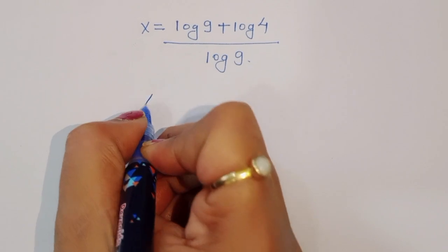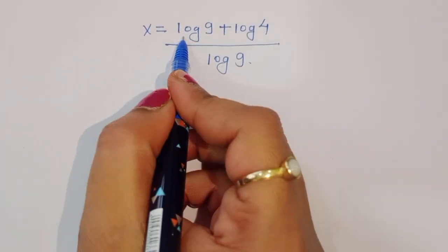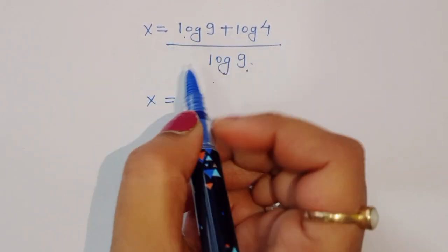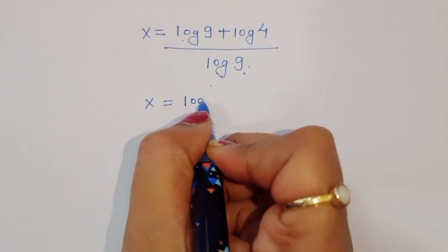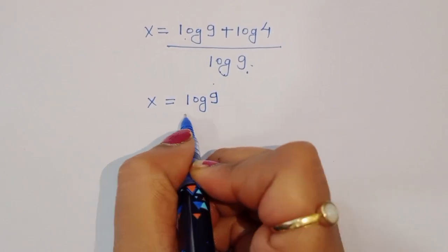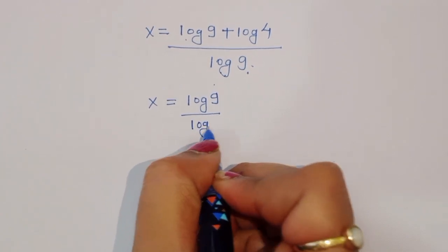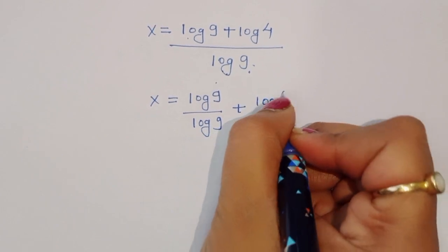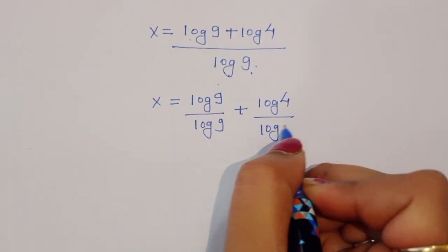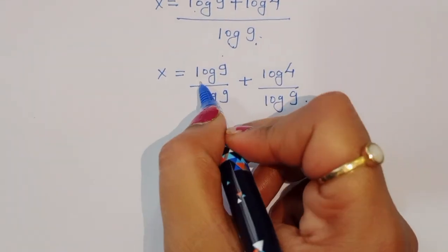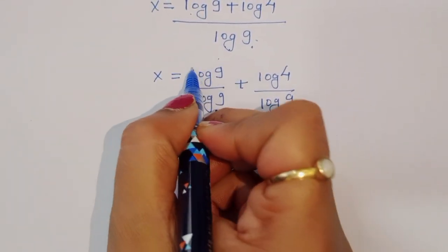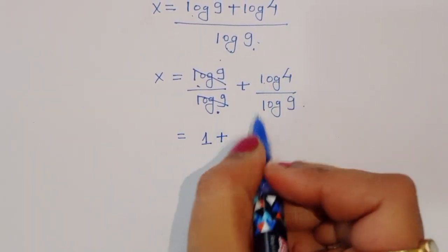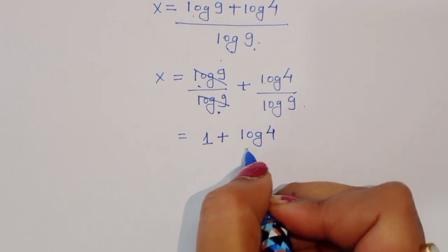So x is equal to log of 9 plus log of 4 divided by log of 9. We can separate this term: x is equal to log of 9 divided by log of 9, plus log of 4 divided by log of 9. Since log of 9 divided by log of 9 equals 1, we can write x is equal to 1 plus log of 4 divided by log of 9.